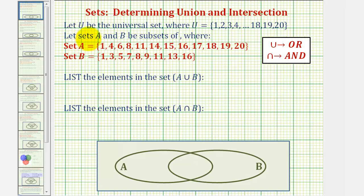In this example, we're given U as a universal set where U contains the elements one, two, three, four, all the way through twenty. So the universal set contains the whole numbers one through twenty. Sets A and B are subsets given here.